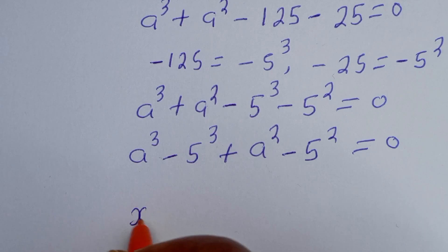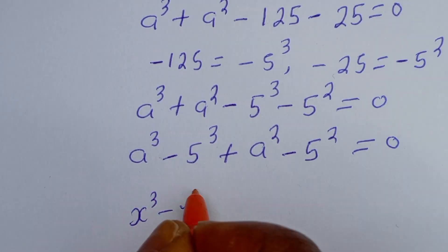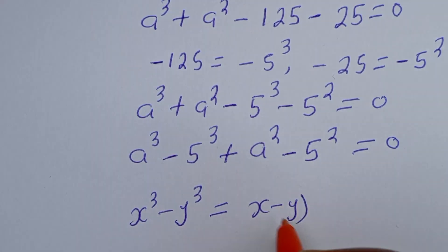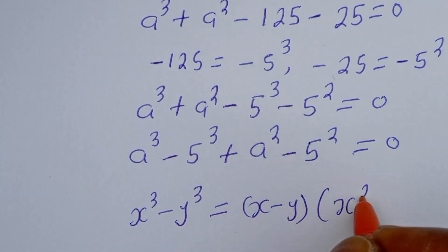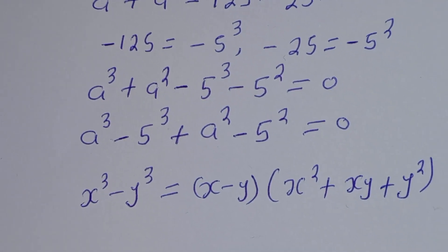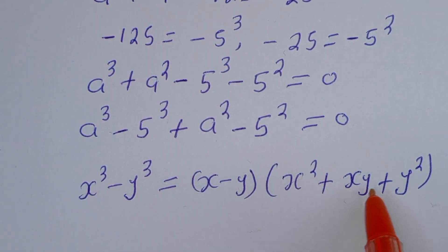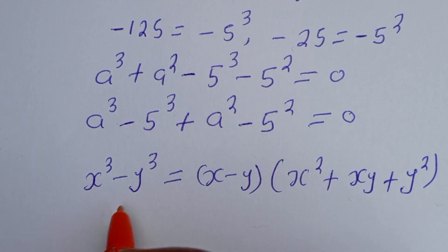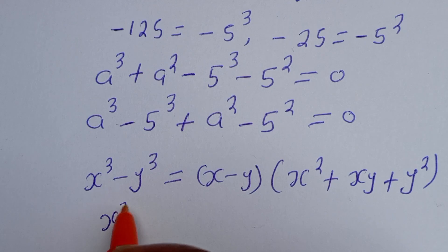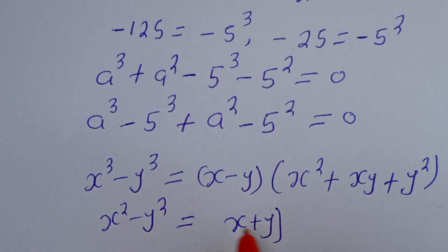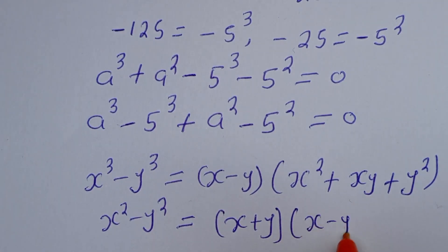Let's compare this. We have a to the power of 3 minus 5 to the power of 3, plus a squared minus 5 squared, equal to zero. Take note that if you have x to the power of 3 minus y to the power of 3, this is equal to (x minus y)(x squared plus xy plus y squared). And if you have x squared minus y squared, this is equal to (x plus y)(x minus y).